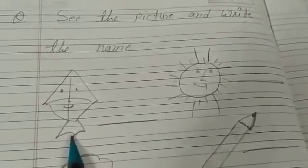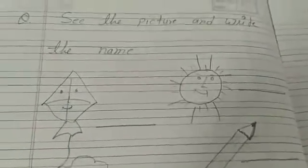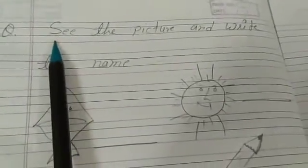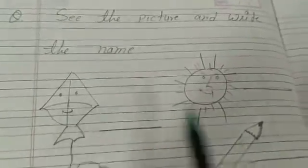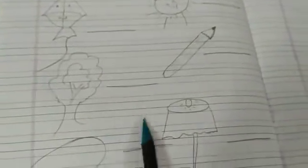What is this? This is a kite. Your question is, see the picture and write the name. We will see the pictures and write the names in front of them. I have drawn some pictures here with lines in front of them where we will write the names.